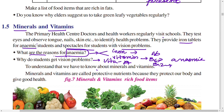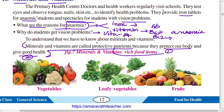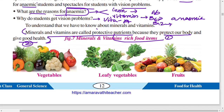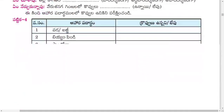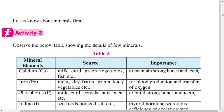To understand vision problems, we need to know more about minerals and vitamins. Minerals and vitamins are called protective nutrients because they protect our body and give good health to us. Vegetables, leafy vegetables, and roots contain lots of minerals and vitamins.